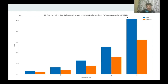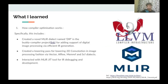We are currently investigating and trying to improve performance for larger kernels. In terms of what I learned, the first area is how compiler optimization works. I created a novel MLIR dialect named DIP in the Buddy compiler project for adding support of digital image processing. I created a lowering pass for lowering 2D convolution in an image-processing fashion via vector, affine, memref, and SCF dialects of MLIR, and interacted with the MLIR git tool for IR debugging and development.